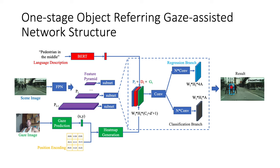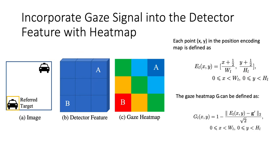In this figure, P is the feature map from the feature pyramid, D is the feature map from the language, and G is the gaze heat map. We incorporate the gaze signal into the detector feature with the heat map. The left image shows the original image with two cards, and the middle image shows the corresponding detector feature. Since the detector wants to detect all the cards, features A and B should be similar. To use the gaze signal, we build a heat map to highlight feature B and separate feature A. The position encoding map is the normalized version of the x-y coordinate, and the gaze heat map G is defined as the normalized distance from each point to the gaze position.